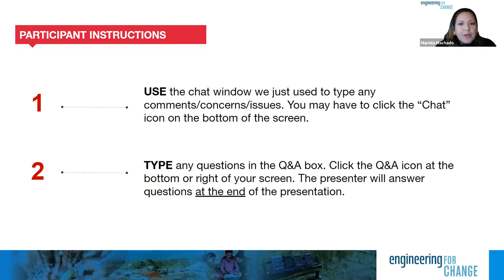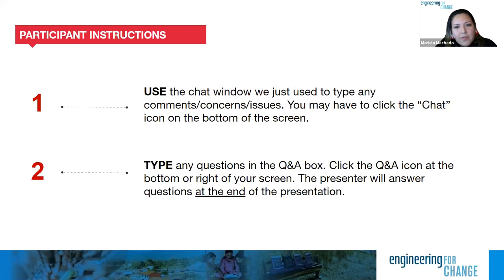A couple of additional instructions before we get started: you can use the chat window to share remarks during the session. If you have technical questions or difficulties, just send a private chat to the Engineering for Change admin. If you encounter any audio trouble, try hitting stop and start, or reconnecting. During the seminar, please use the Q&A window — we will allocate 15 minutes to Q&A. Click the Q&A icon and type your questions to the presenter, and we'll gather and ask them at the end.